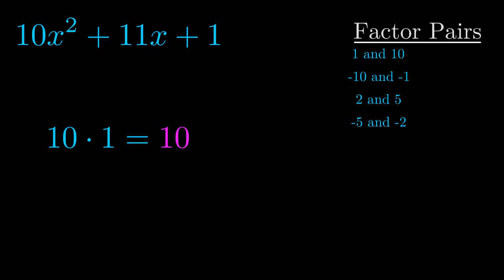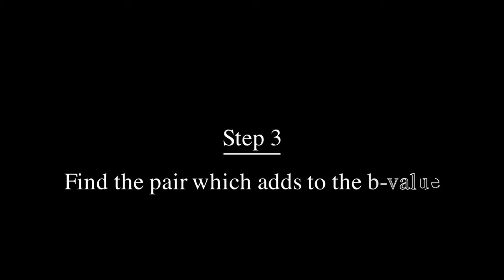Now once you have these factor pairs the goal is to find which of these pairs adds to the b value. The b value is the coefficient on the x term.